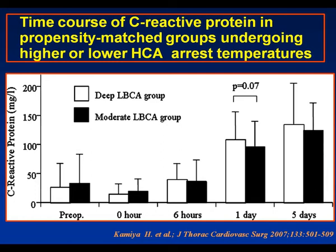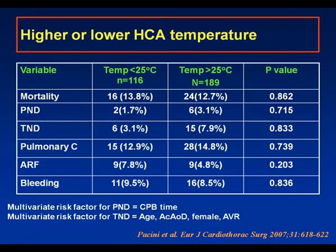The Bologna group considered corporeal arrest temperatures below and above 25 degrees centigrade. They saw similar mortality between groups, a not significantly different permanent neurological deficit rate, a slightly higher but not statistically significant transient neurological deficit rate in the higher temperature group, and similar pulmonary complications, renal failure, and bleeding.